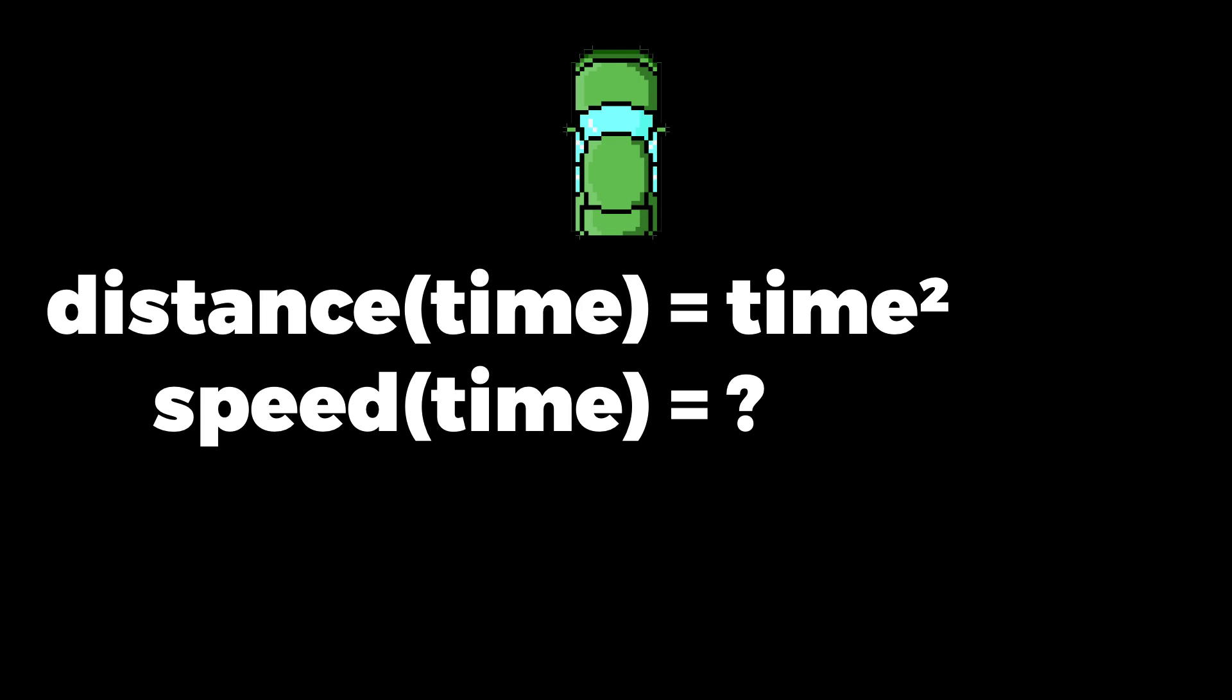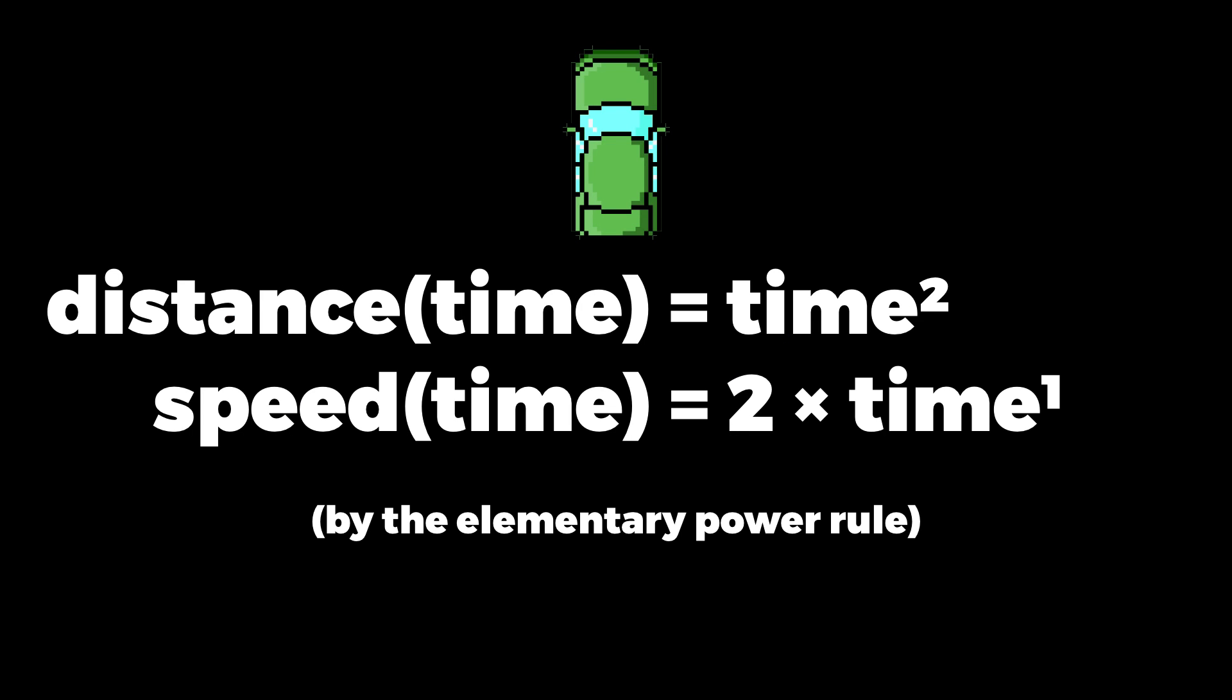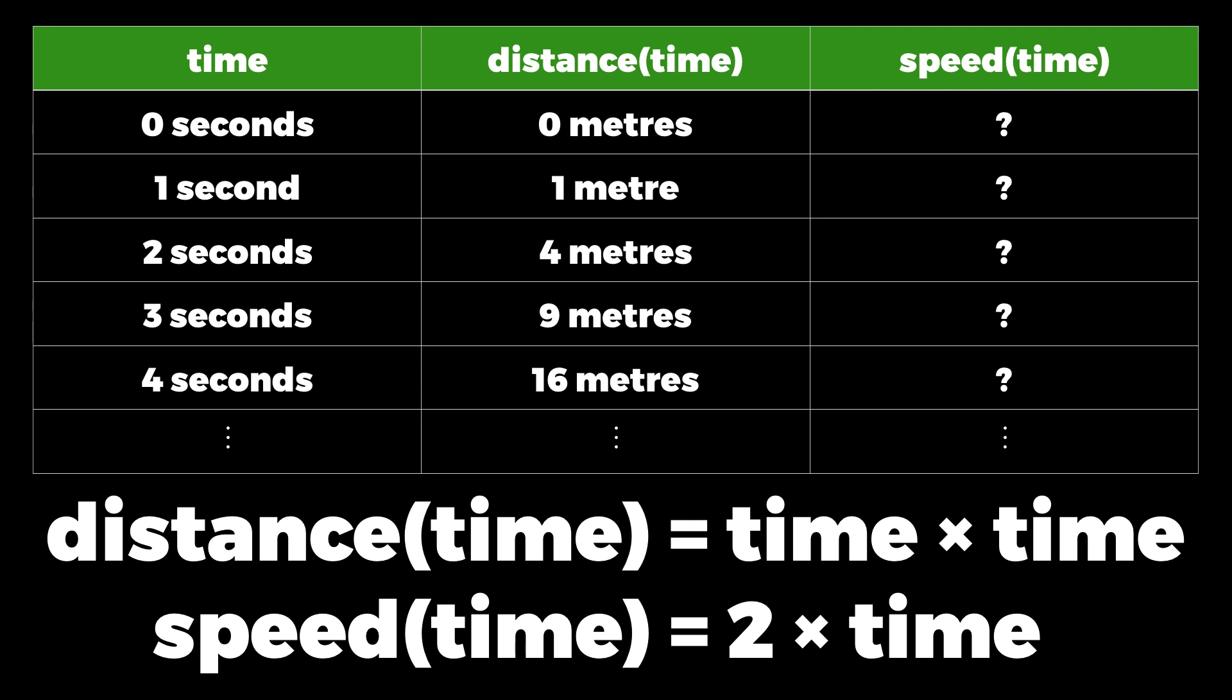So time to the power of 2 differentiates to 2 multiplied by time to the power of 1, which is just 2 multiplied by time. Now we know that speed is 2 multiplied by time, we can compute the speeds. So the big picture is, from the expression for distance, the computer uses some rules to work out the expression for speed, and then evaluates it for different inputs.